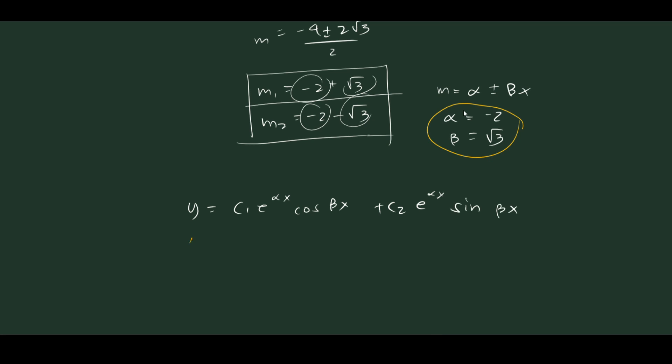So let's substitute these values. We get c1 e to the negative 2x cosine square root of 3x plus c2 e to the negative 2x sine square root of 3x.